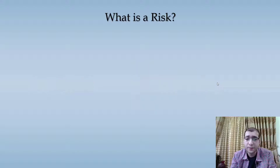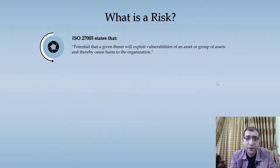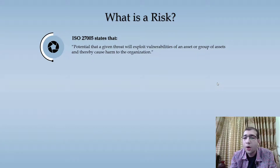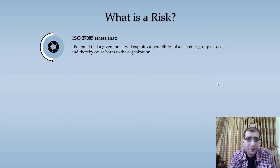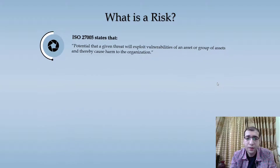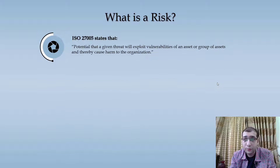So what is a risk? ISO 27005 states that it is the potential that a given threat will exploit vulnerabilities of an asset or group of assets and thereby cause harm to an organization. We'll be able to understand this definition after looking at the example which will come afterwards, but before that let's see this formula.